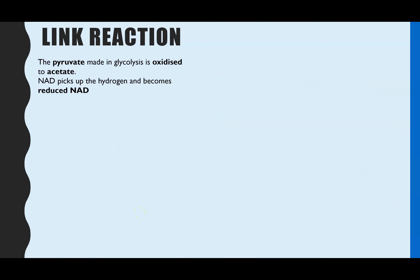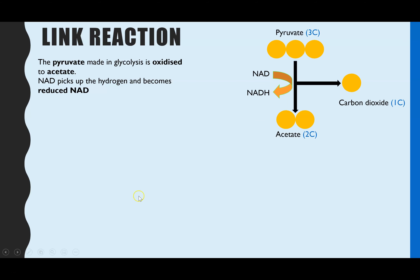So let's have a look at the link reaction first. The key thing is that pyruvate, which was made in glycolysis, is oxidized into acetate. In doing that, the hydrogen lost from pyruvate is picked up by the coenzyme NAD, reducing it to form NADH. Pyruvate is a three-carbon molecule and acetate is only two carbons — this is one of the stages where carbon dioxide is formed.